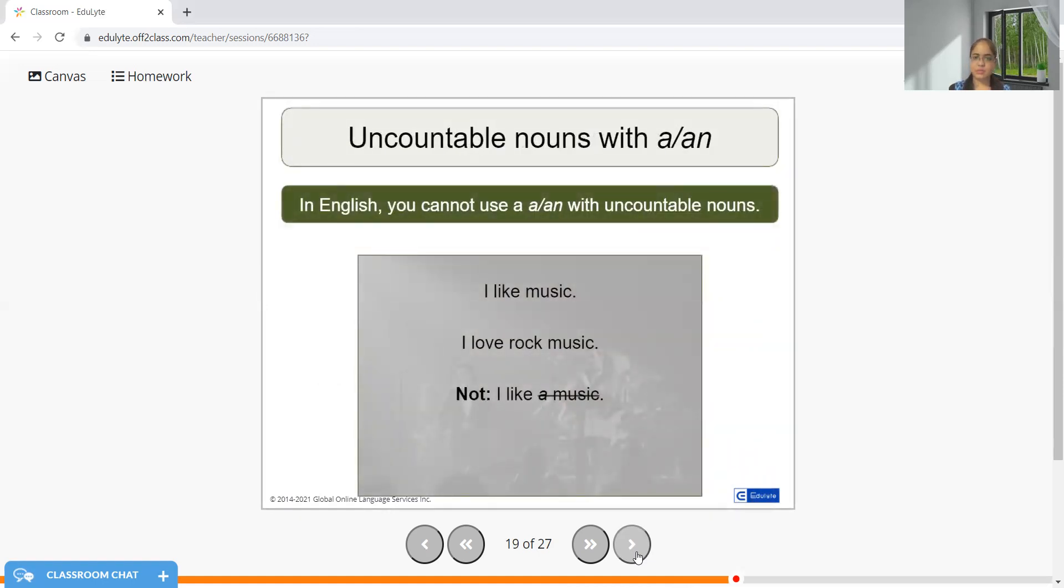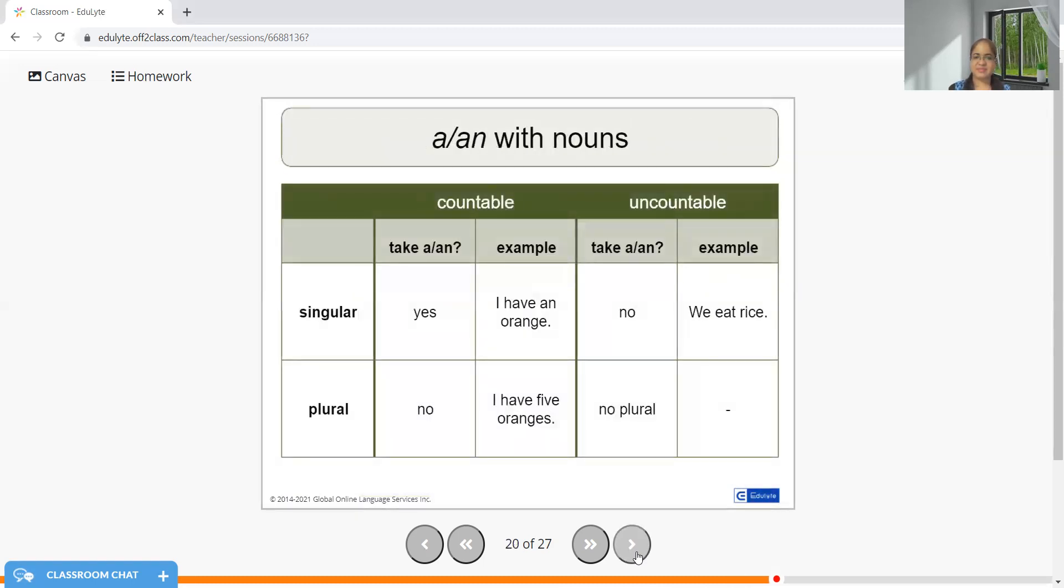Some more uncountable nouns: music, you cannot count music. Rice, rices is wrong. Orange, oranges, correct. With one orange we have to use AN orange. With many oranges, we do not need to use any article. We just need to give the quantity: five oranges, ten oranges, or whatsoever the case may be.